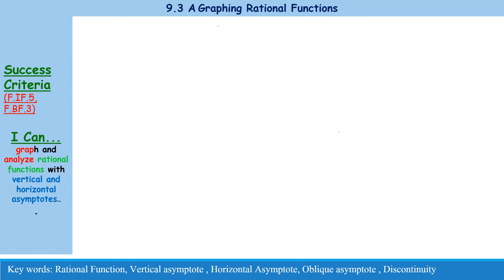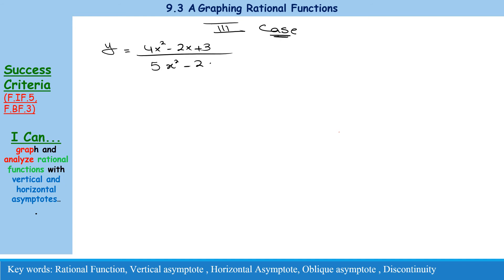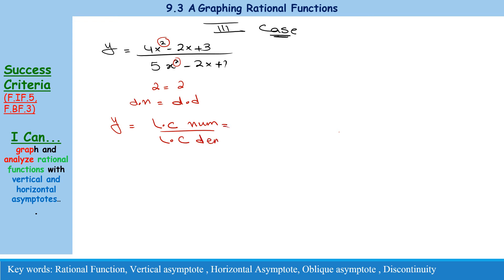Now let's work on Case 3. For example, y equals 4x squared minus 2x plus 3 over 5x squared minus 2x plus 1. The degree of the numerator is 2 and the degree of the denominator is also 2. When the degrees are equal, the horizontal asymptote is the leading coefficient of the numerator divided by the leading coefficient of the denominator.